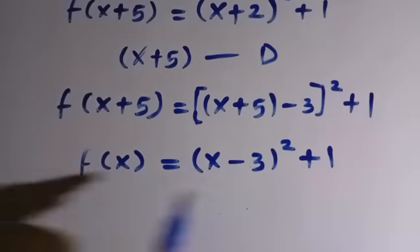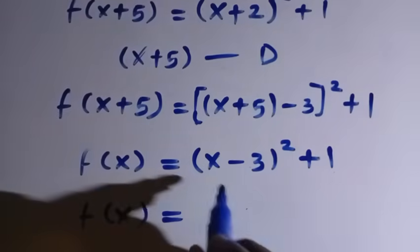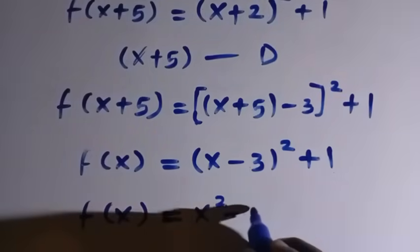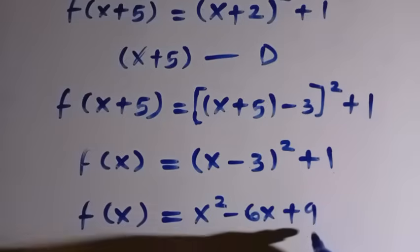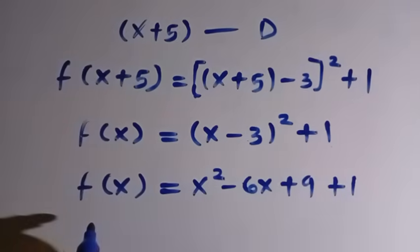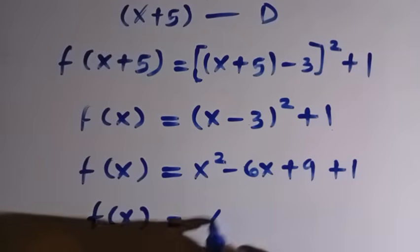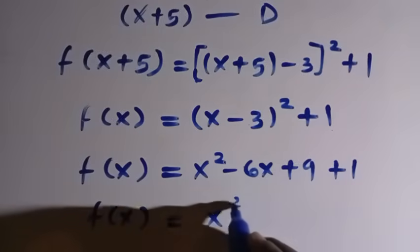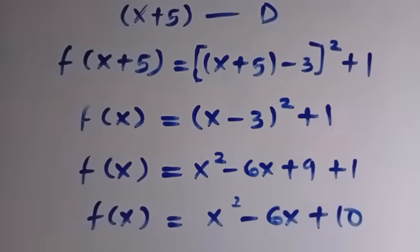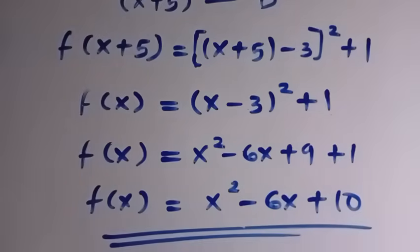We have to expand this. By expanding, we have f of x equals the expansion of x minus 3 squared, which becomes x squared minus 6x plus 9, plus 1. Therefore, we have f of x equals x squared minus 6x plus 10. That is the result using the form manipulation method.